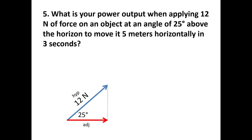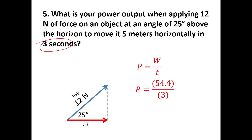What is the power output when applying those same 12 newtons at 25 degrees, covering 5 meters in 3 seconds? We already found the work is 54.4 joules from the previous problem. Divide by the time: P = 54.4/3 = 18.13 watts.